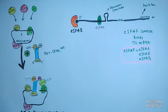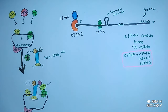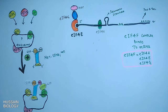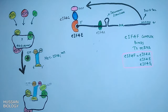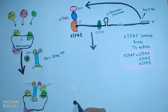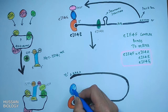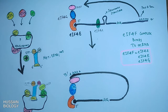eIF4A has helicase activity, which helps in removing secondary structures from the mRNA. Furthermore, eIF4G binds with eIF4E at the 5' end, and to eIF4G the PABP factor — poly-A tail binding protein — binds as shown in the diagram. After all these bindings and interactions, the poly-A tail of mRNA interacts with PABP, and by this interaction the poly-A tail binds PABP, thereby causing the circularization of mRNA as shown in the diagram.